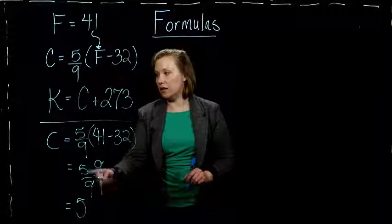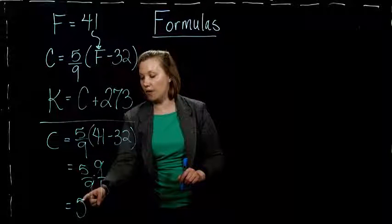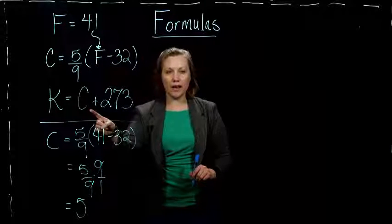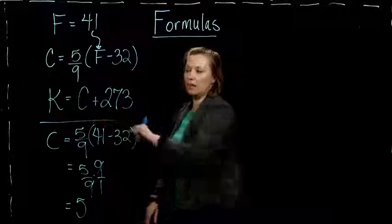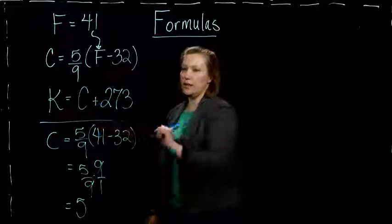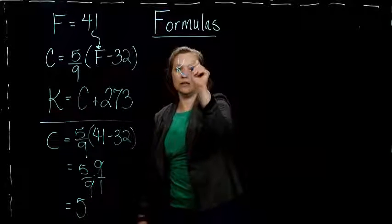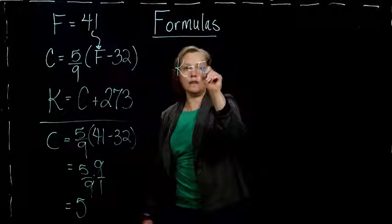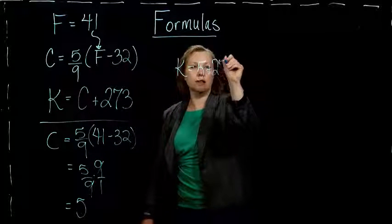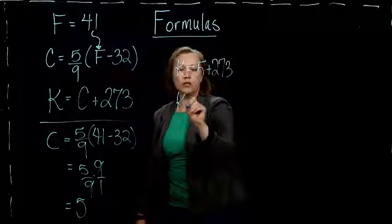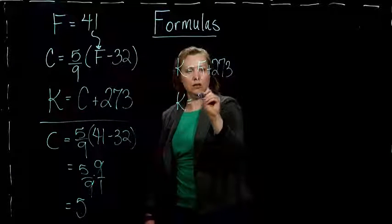But now I need to take what I have for, now I have C. And so I can take that C and put it in for C in my formula for Kelvins. So I get 5 plus 273, which is 278.